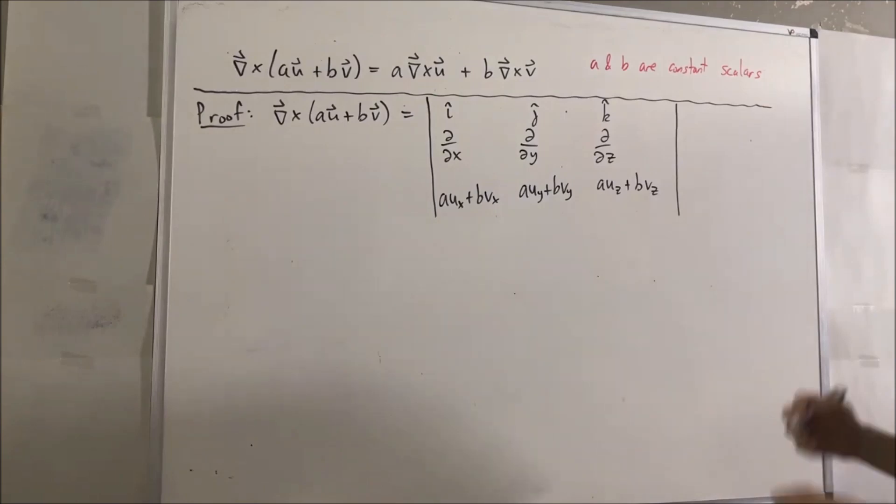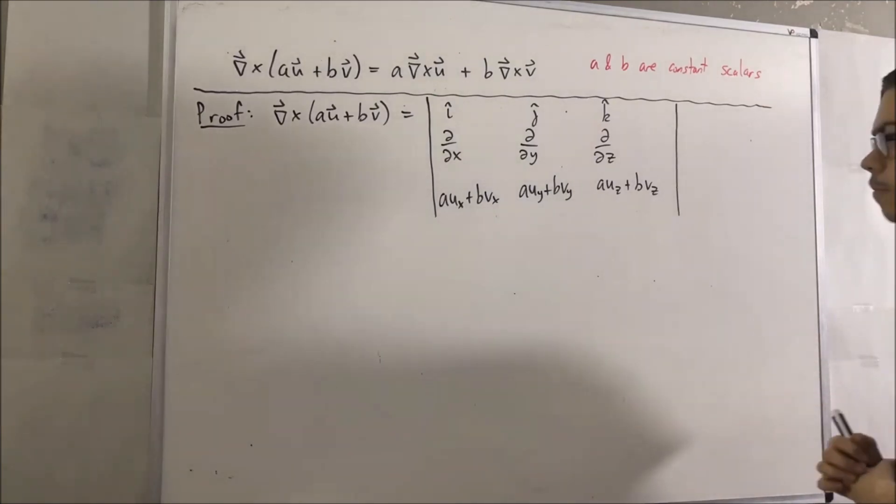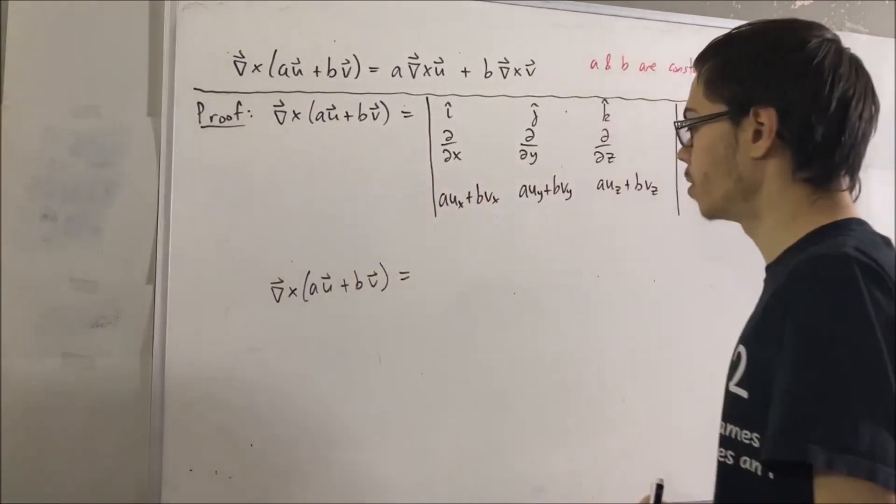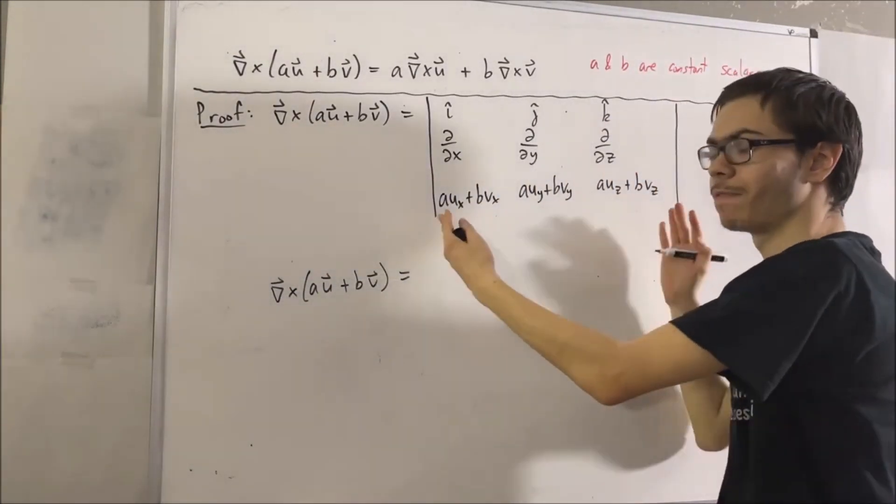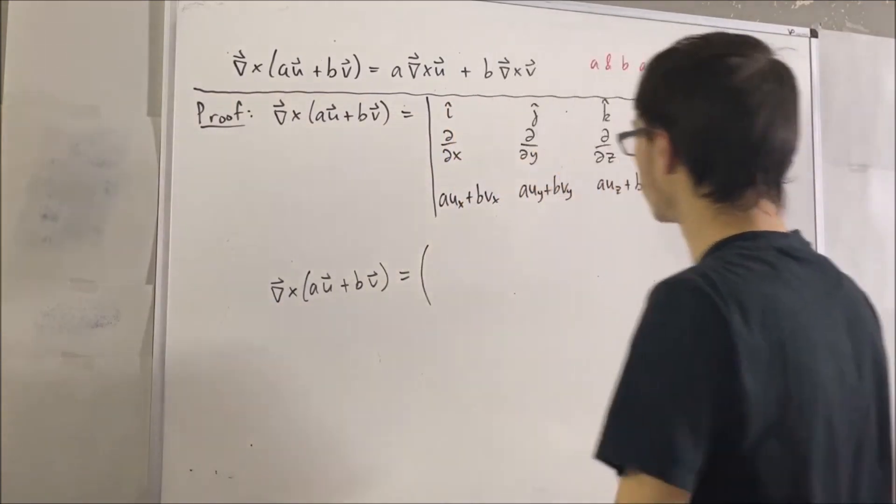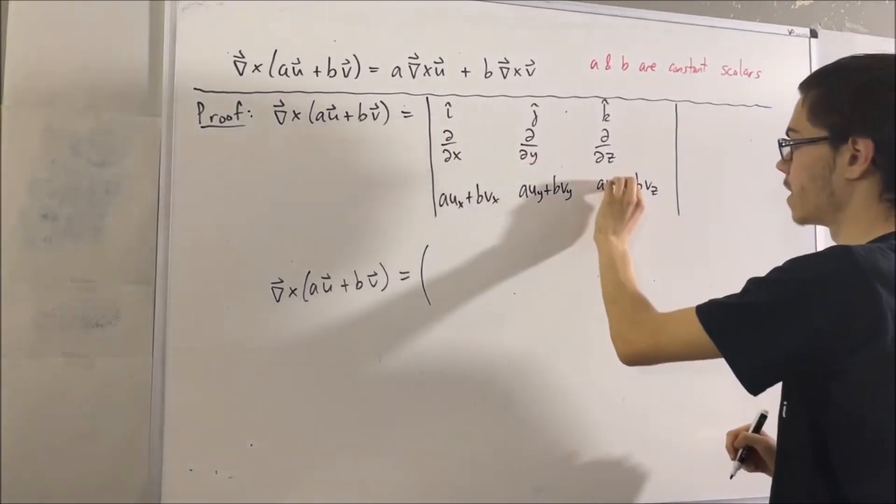And so now, we are going to compute this thing. To compute this, we're computing it like we would evaluate a cross product. For the i component, it's going to be this on this minus this on this.